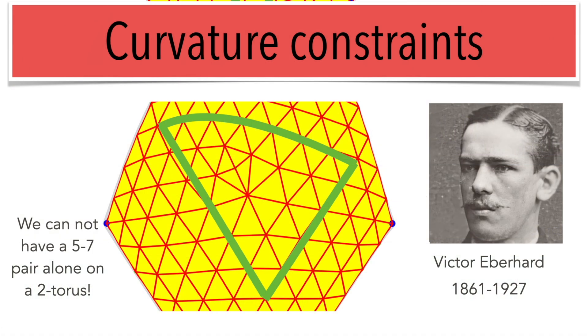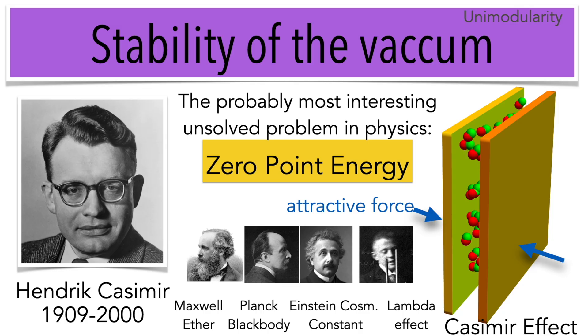Let's look first at the curvature configuration constraints. Victor Eberhard was a blind geometer who has seen them already. Stability of the vacuum is probably the most important open problem in physics. There is an attractive force which you can measure when you put two plates close together, which can be explained using the Casimir effect.